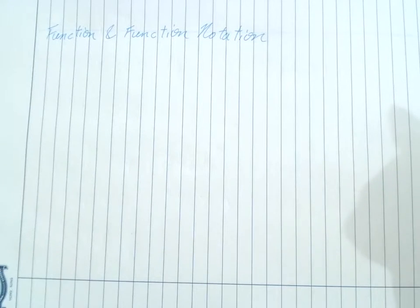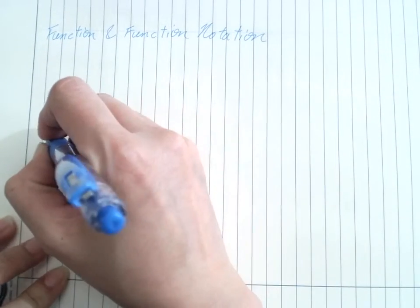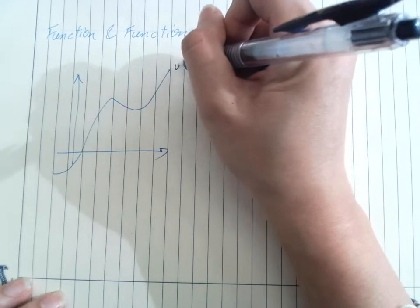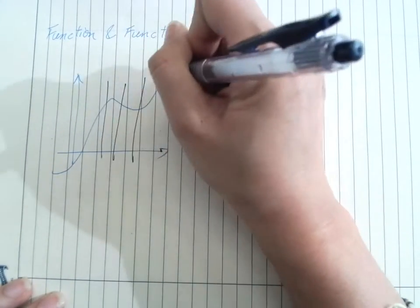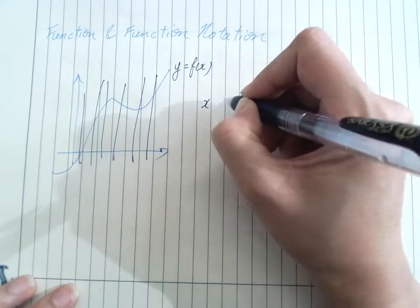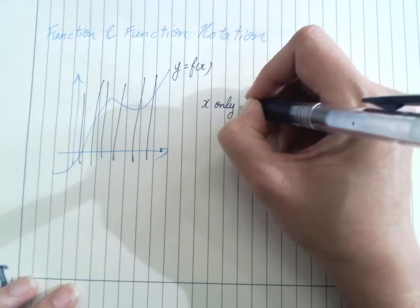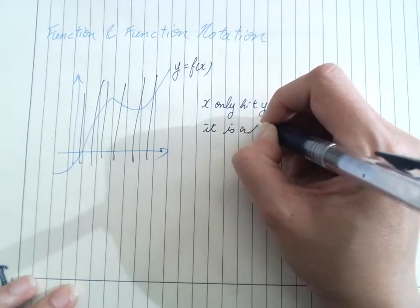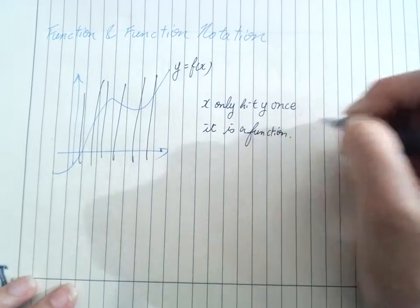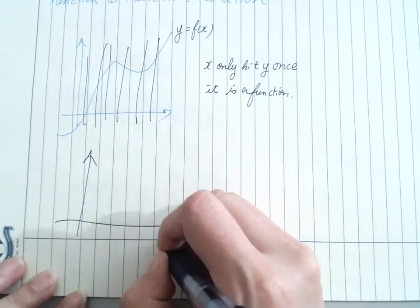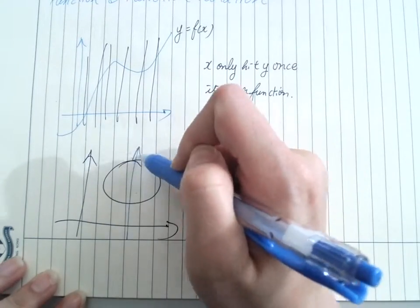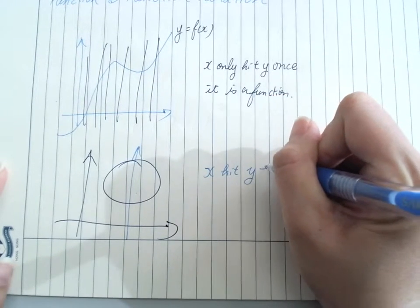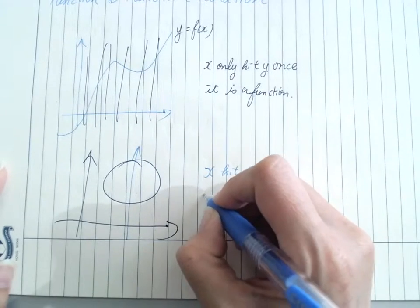To define a function, we use the vertical line test. For any function y equals f(x), when performing the vertical test, if x only hits y once, it's a function. If the vertical line hits y twice, then it is not a function.